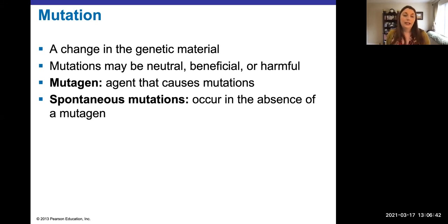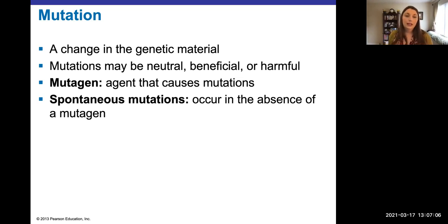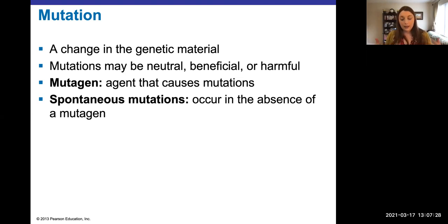A mutagen is anything that causes a mutation — sunlight is a mutagen, as are lots of different chemicals. Spontaneous mutations can be due to an error, like a polymerase copying error. The definition of spontaneous mutation means it was not caused by a mutagen — not because of exposure to a chemical or sunlight. But remember, there are lots of reactions happening in the cell all the time, so it is possible for something to happen within the cell.